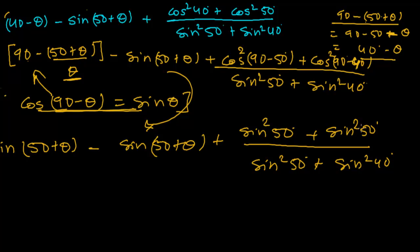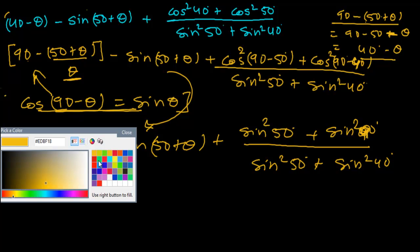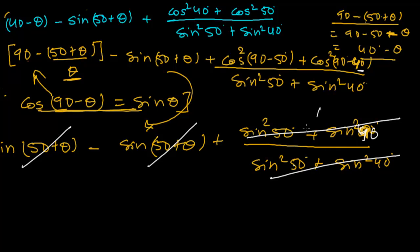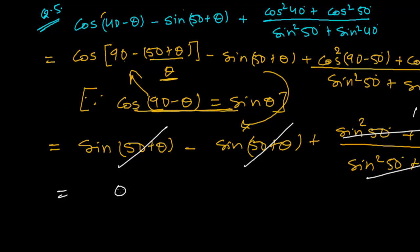So cos(90 minus theta) gives sin 40 — confirming the angle is 40. Now sin squared 50 plus sin squared 40 in the numerator cancels completely with sin squared 50 plus sin squared 40 in the denominator, giving 1. The first two terms already cancelled giving 0. So the final answer is 0 plus 1, which equals 1.